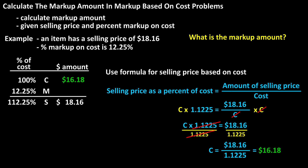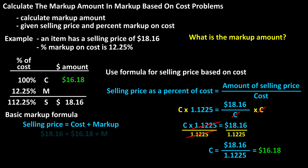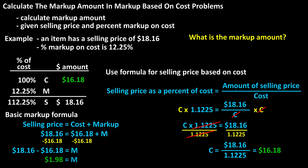Now we can use the basic markup formula: selling price equals the cost amount plus the markup amount. So we have $18.16 equals $16.18 plus markup. The markup amount equals $1.98. We can put that in the table, and we have our final answer.